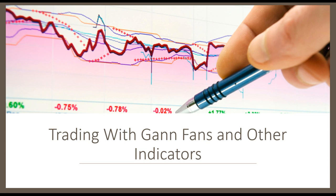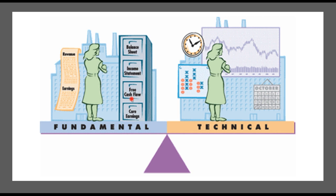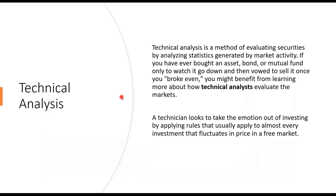Today we're going to be discussing GAN fans — however you wish to say it — and other indicators. I've been asked several times to do a class on GAN fans; it seems to be a fairly well-used indicator now that we have Java charts that allow us to put just about everything on our charts. I don't really trade with them — not because they're good, bad, or indifferent — only because when I started trading and building my strategies these were not applicable. I've done my research and I've asked a friend to prepare a presentation showing you how to properly square them up on your charts.